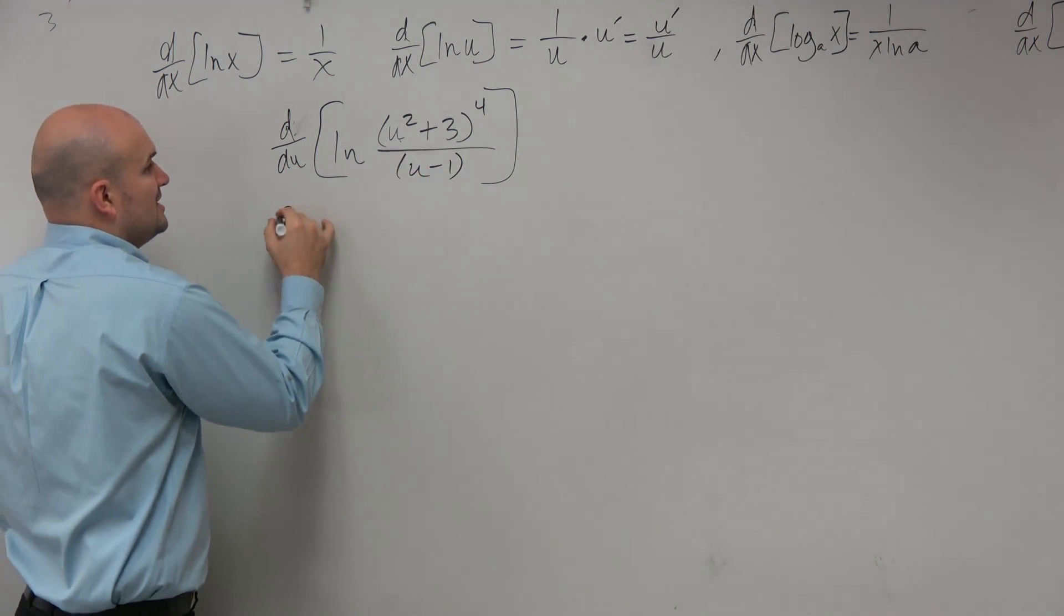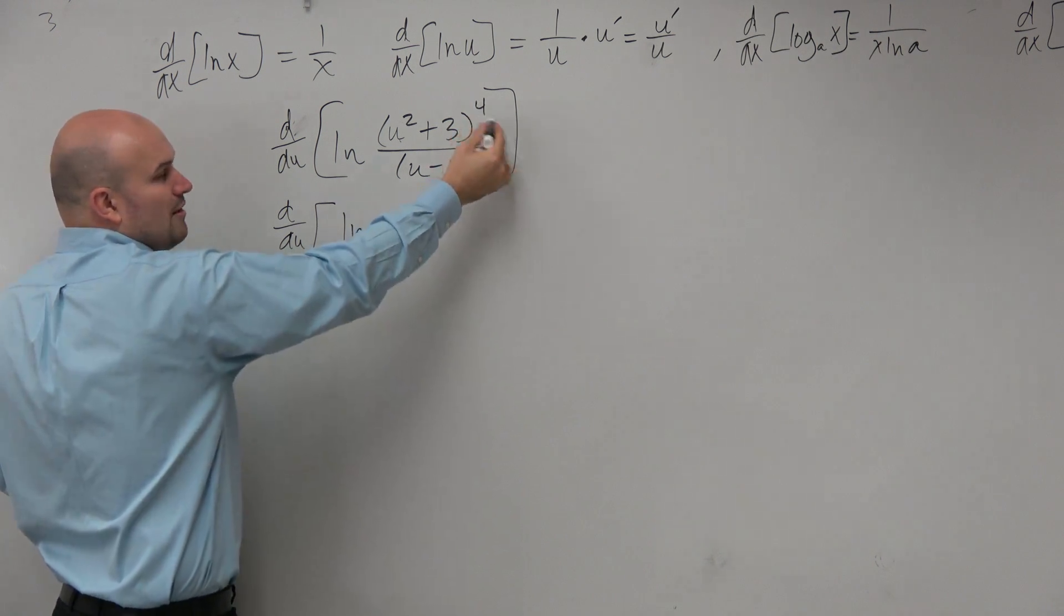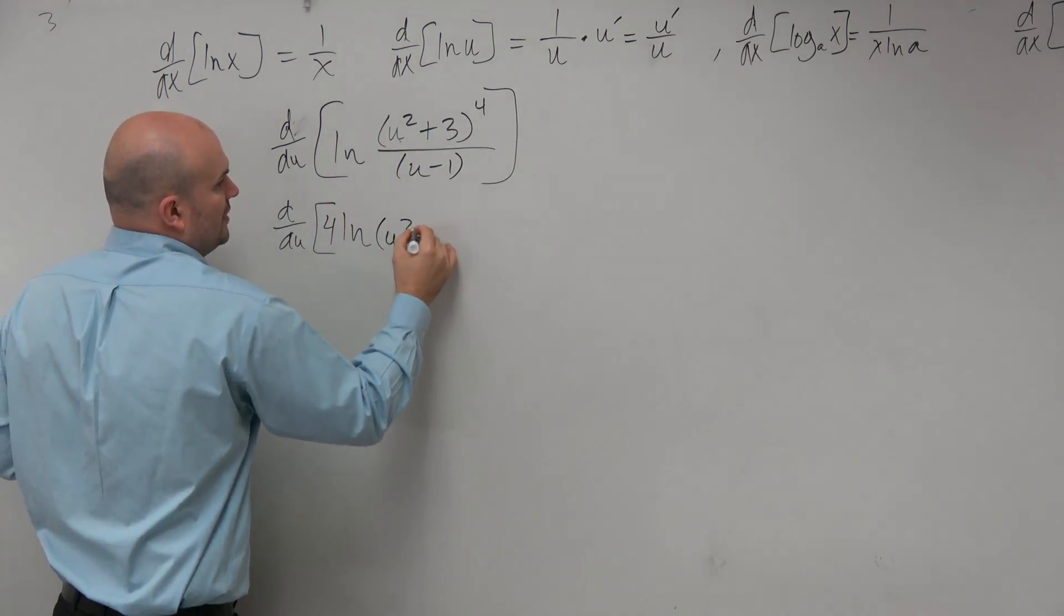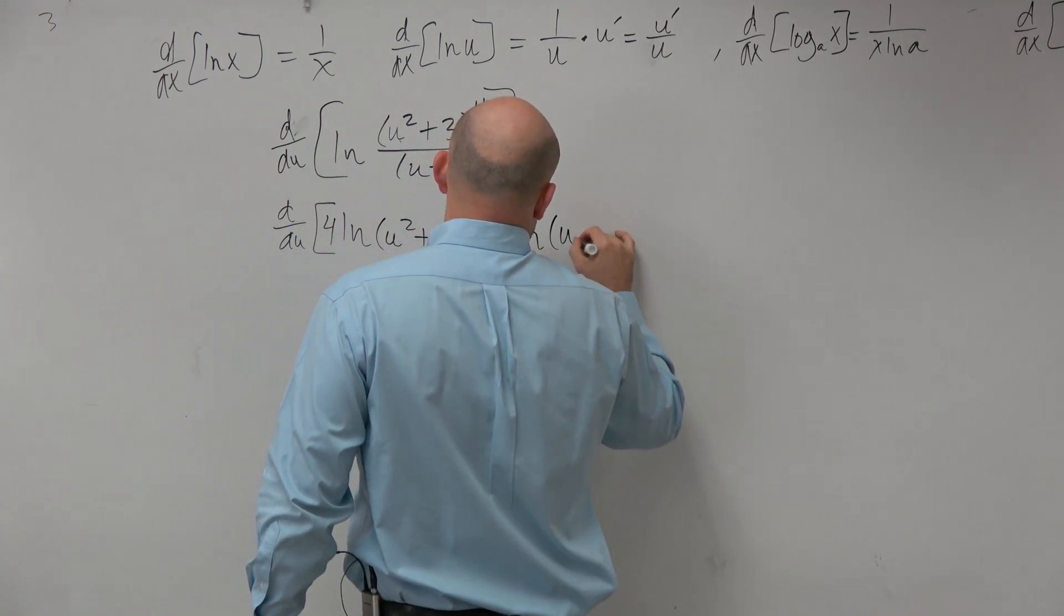We know here division, we can separate this into the ln, and then a power, we can bring that down in front, right? So 4 of u squared plus 3 minus ln of u minus 1.